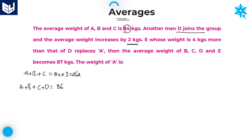The sum of ABCD is equal to 86 into 4. The new average is 86 and the number of persons are 4. 86 into 4 equals 320 plus 24, which is equal to 344.